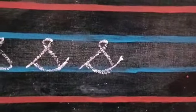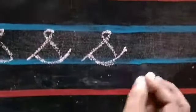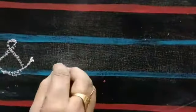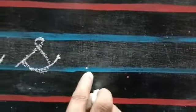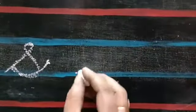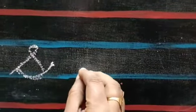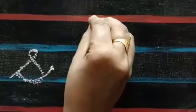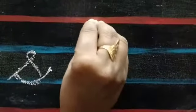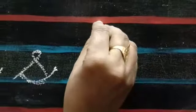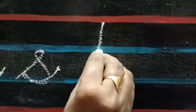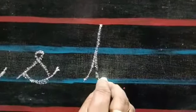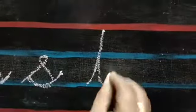Now I am going to teach you cursive letter T. Children, keep your pencil on the second blue line. Go up and touch the slanting line. Come along the slanting line, touch the slanting line, go up.